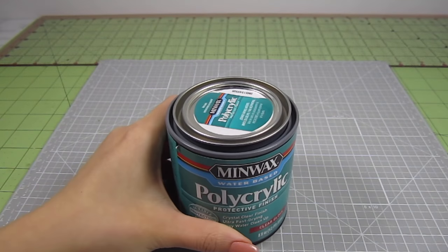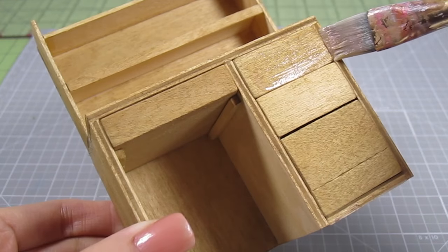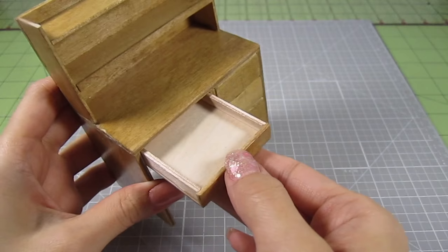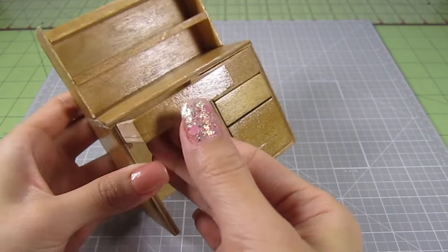And then finally for a glossy look, I'm going to brush on some polyacrylic. I did 2 layers of this stuff. Look at that nice sheen that poly gives it.